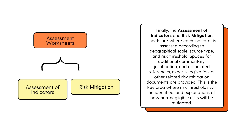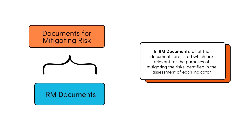Finally, the RM document sheet is for risk mitigation documents, and this is where all of the documents are listed which are relevant for the purposes of mitigating risks. All of the risks identified in the Risk Mitigation tab will be accompanied by documents which will be listed here along with their accompanying details.